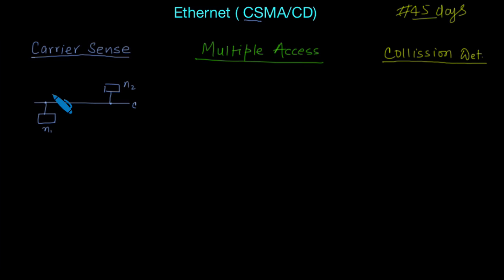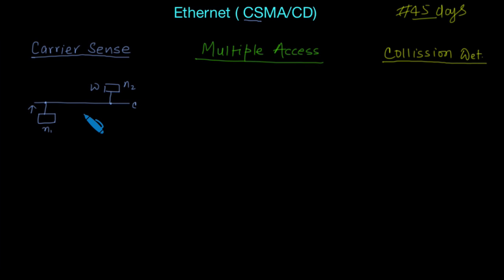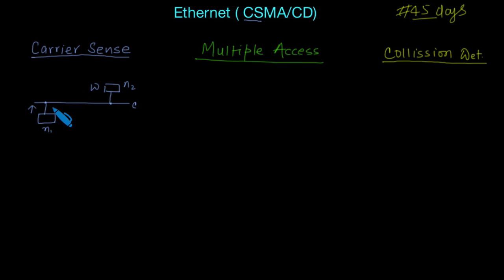If there is proper synchronization — when one node transfers data on the carrier, the other node will wait — then the carrier is properly used. But if there is a lack of synchronization, there will be a problem. If two channels or nodes try to access the carrier at the same time, a collision occurs.